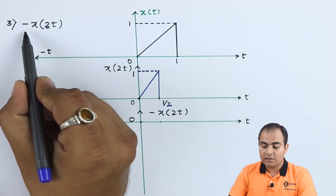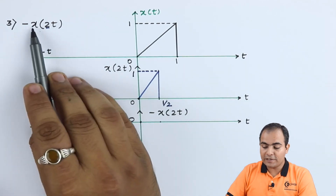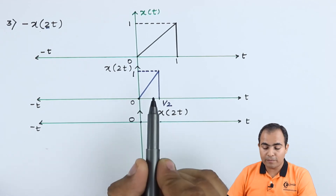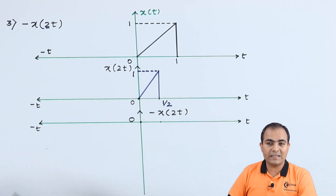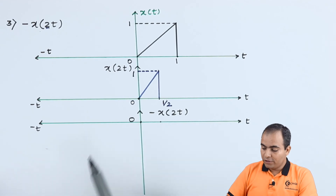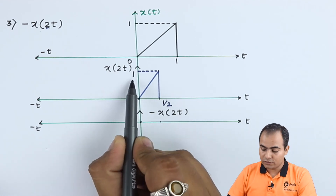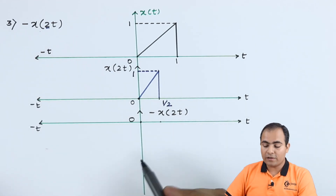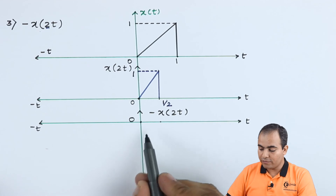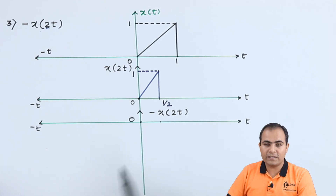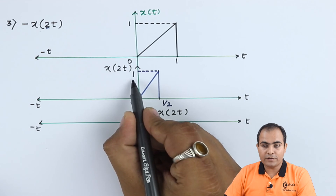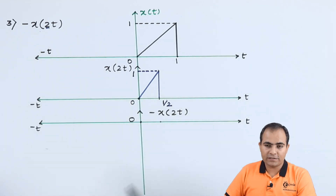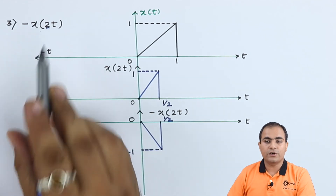Next, amplitude scaling: the function is multiplied by minus 1, so all available amplitudes in the graph are multiplied by minus 1. We have a single amplitude of 1, so 1 multiplied by minus 1 gives minus 1. The total overall graph amplitude will be in the fourth quadrant — it will have a minus sign. The result amplitude is minus 1. This is the result of minus x of 2t.